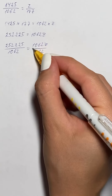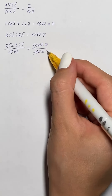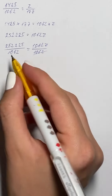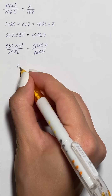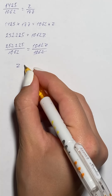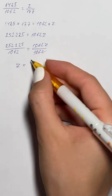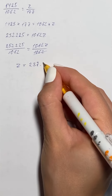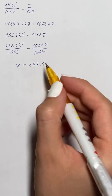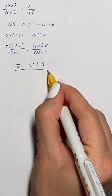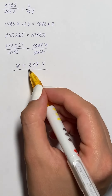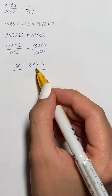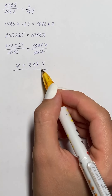We can cancel out 1062 and get that z equals 237.5. So the solution for the proportion is z equals 237.5.